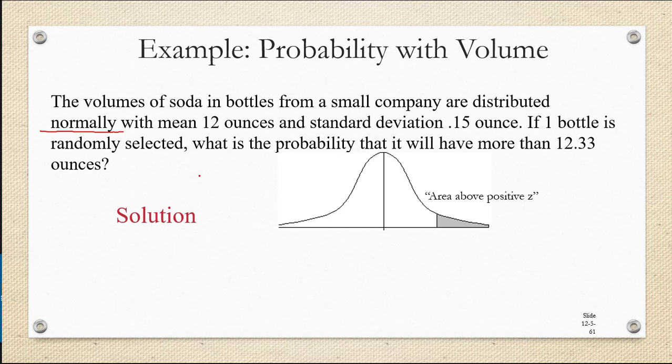They're distributed normally with a mean of 12 ounces and a standard deviation of 0.15 ounce. If one bottle is randomly selected, what's the probability it will have more than 12.33 ounces?